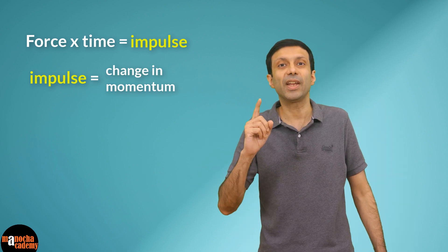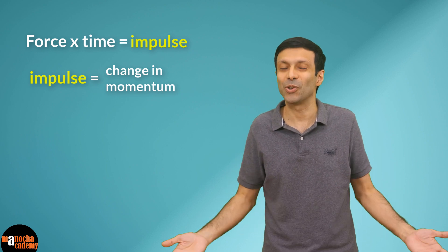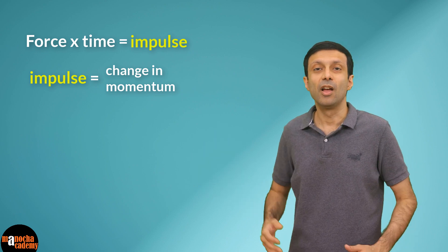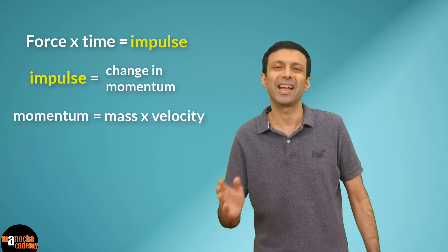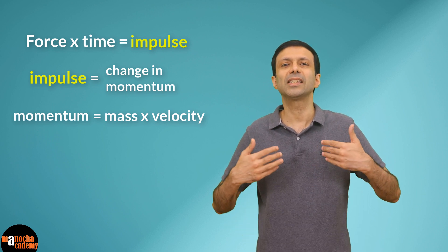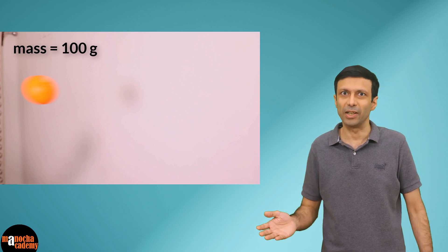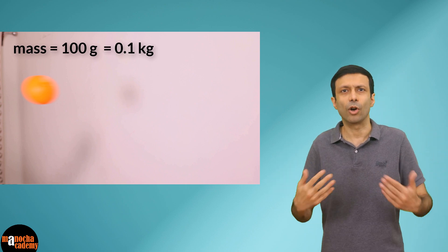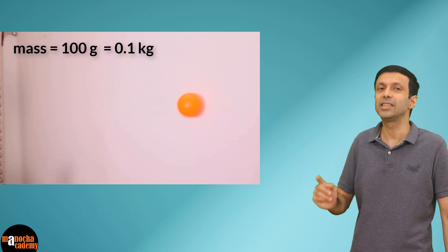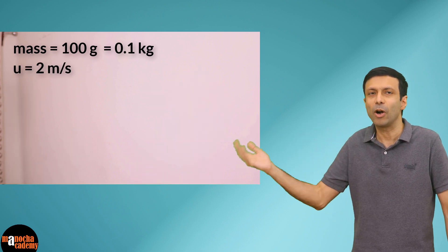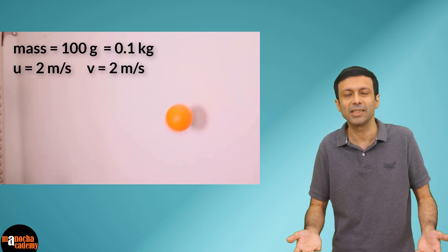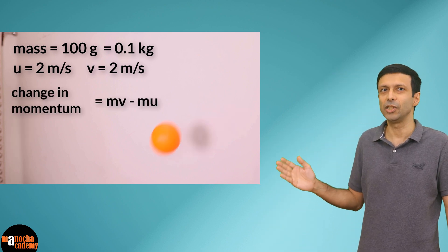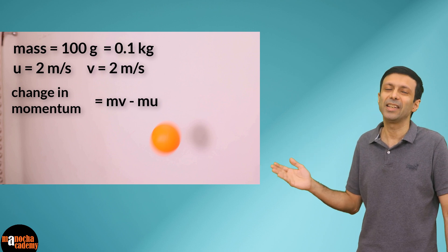Let's calculate the impulse of the ball when it hits the wall, using the formula: impulse equals change in momentum. Momentum is the product of mass and velocity. Let's say the mass of the ball is 100 grams, which equals 0.1 kilograms in SI units. The velocity with which the ball hits the wall is 2 meters per second, and it rebounds with the same speed, so the return velocity is also 2 meters per second.